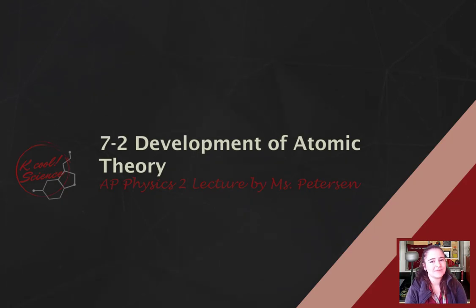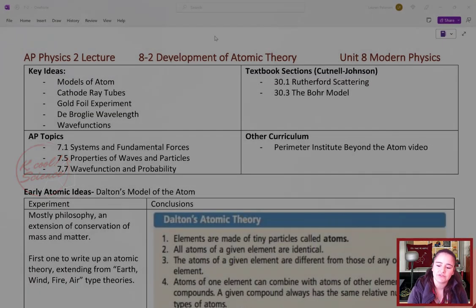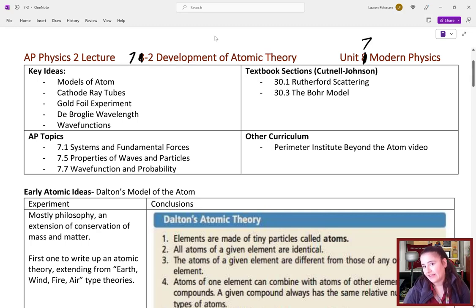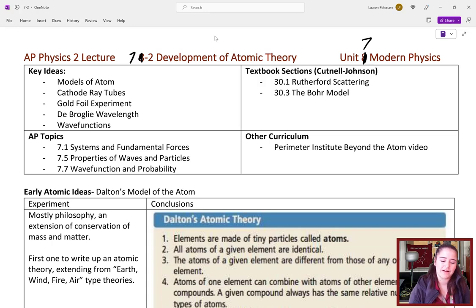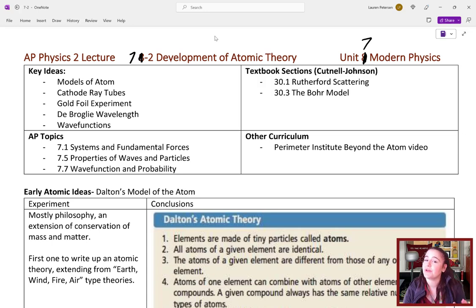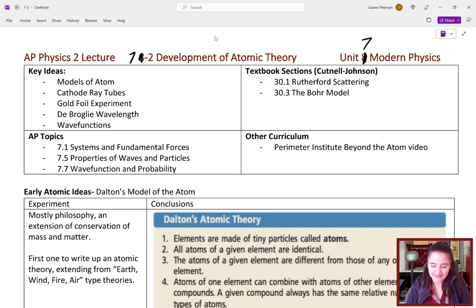Hi guys, Ms. Peterson here, and welcome to AP Physics 2 Lecture 7-2, all about the development of atomic theory. We're going to be going through the story of how we discovered what matter was made of and what atoms are — from the cathode ray that gave us the plum pudding model of the atom, to the Rutherford gold foil experiment, to the Bohr model connecting in the de Broglie wavelength, and talking about the Schrödinger model of the atom and wave functions.